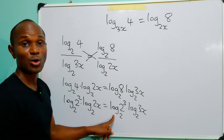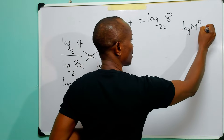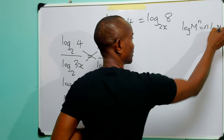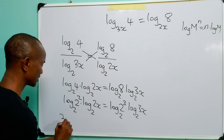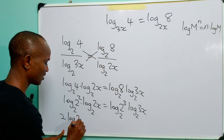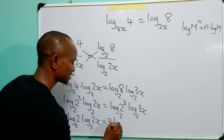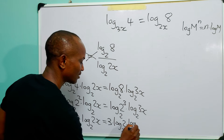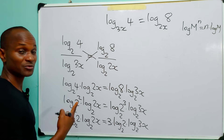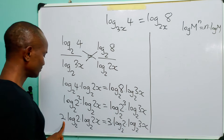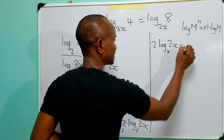Now let us recall the power law of logarithms, which states that log base two of a number raised to power n equals n multiplied by log base two of that number. With this in mind, we bring the two down to multiply, giving us 2 times log base two of 2, multiplied by log base two of 2x, equals 3 times log base two of 2, multiplied by log base two of 3x. Since log base two of two equals one, this simplifies to: 2 times log base two of 2x is equal to 3 times log base two of 3x.